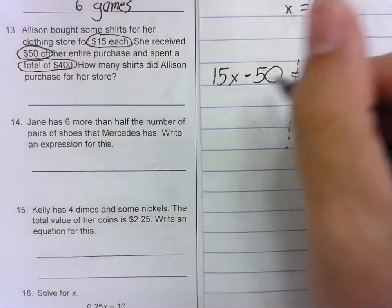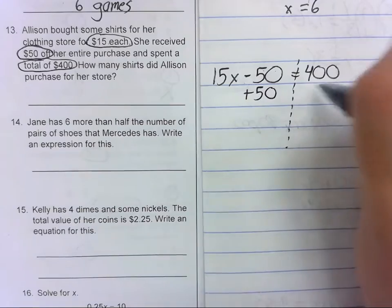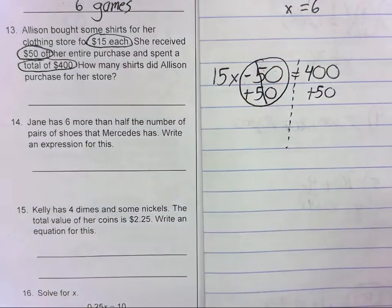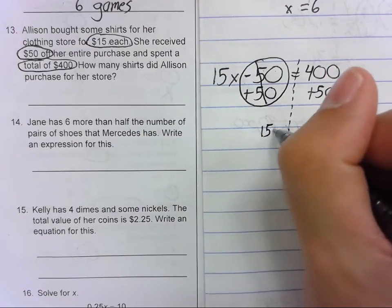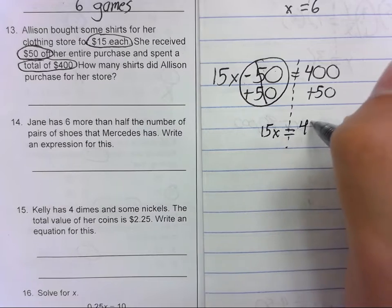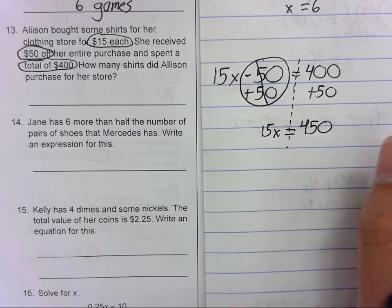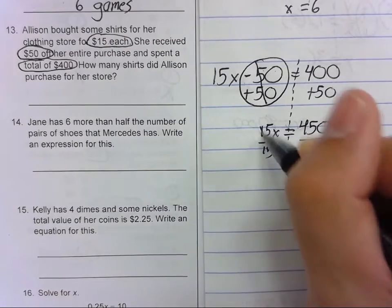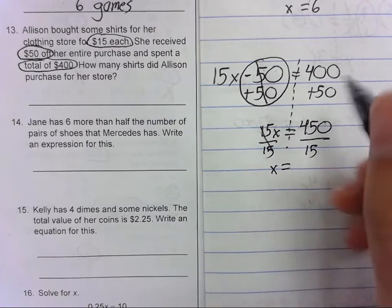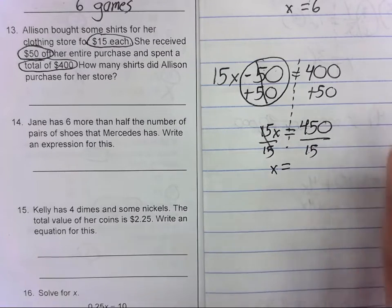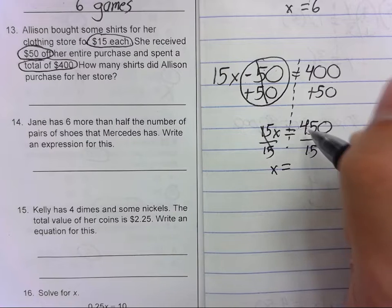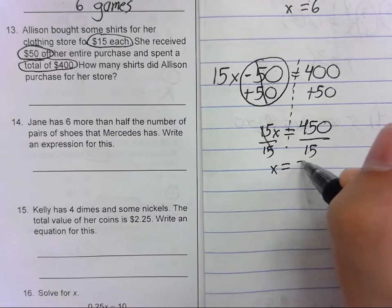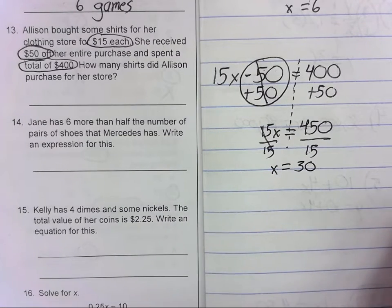Now we solve. First thing we'll do is add 50 to both sides. Bring everything down. 15x equals 450. Divide by 15. Divide by 15. x equals—15 goes into 45 three times. So 45, we can cover up the zero. 45 divided by 15 is three. Throw the zero back in.